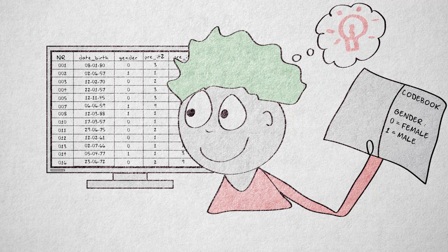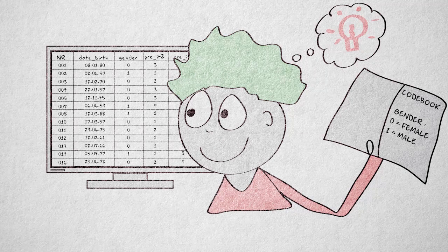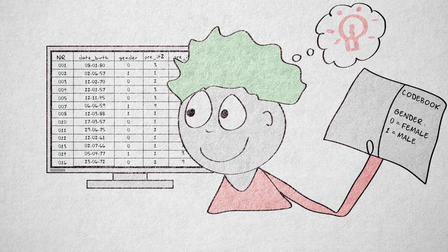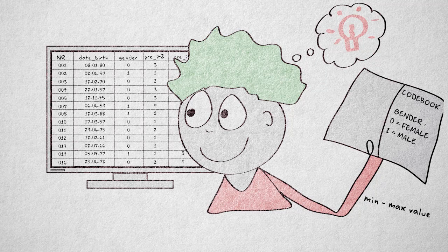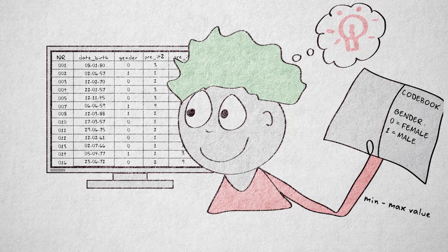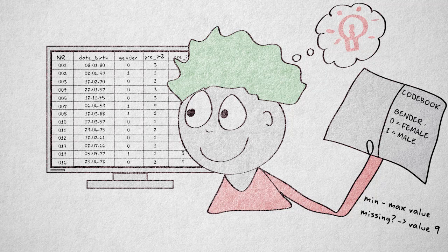The codebook specifies what property each variable measures and what the values mean, what the range of possible values is, and what values are used to denote a participant did not supply relevant information, referred to as missing values.